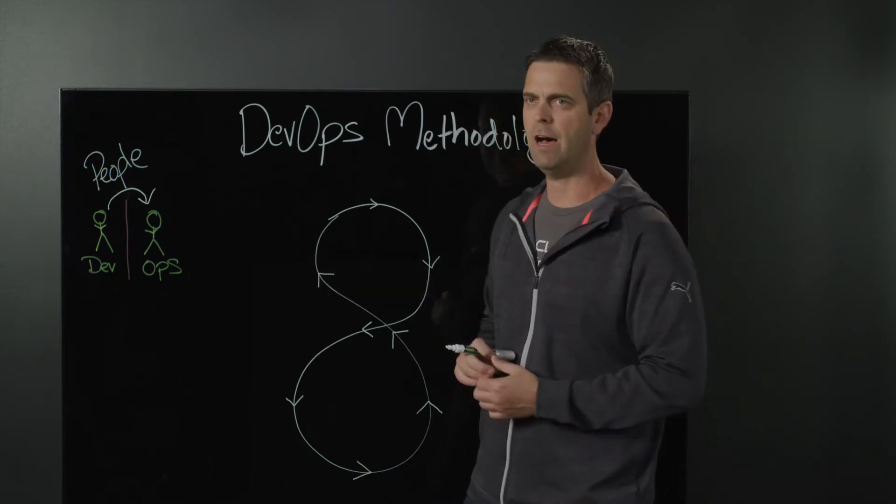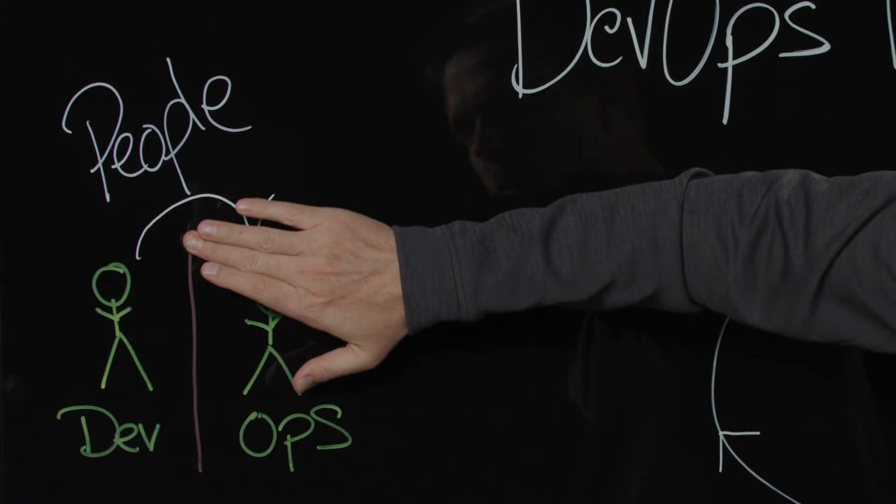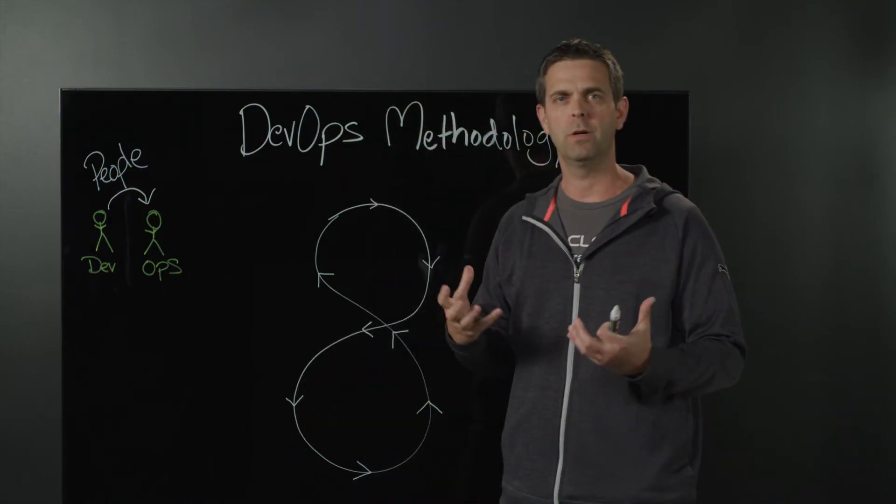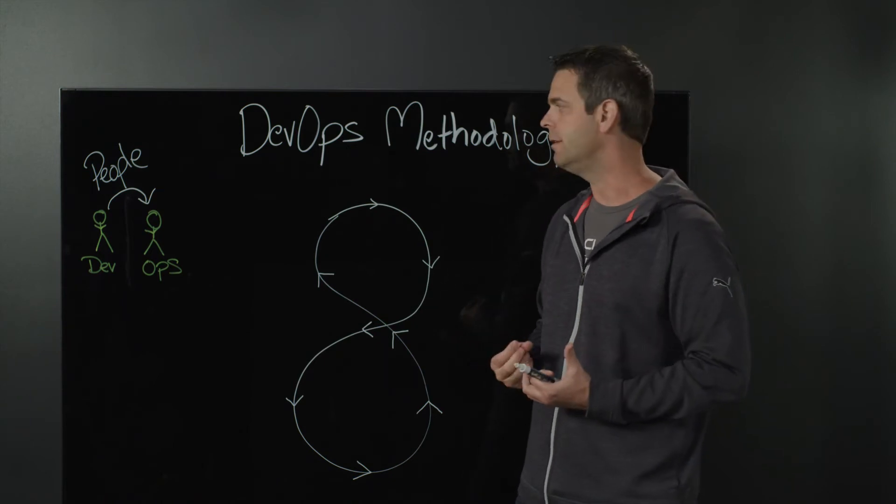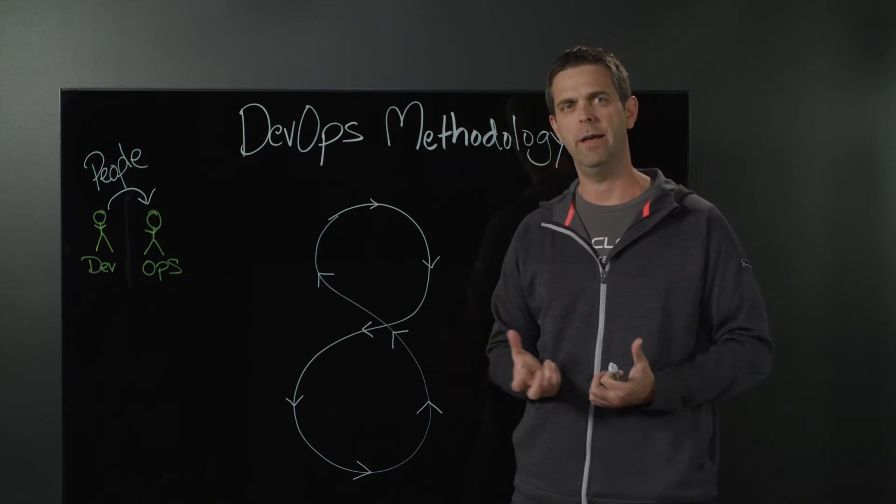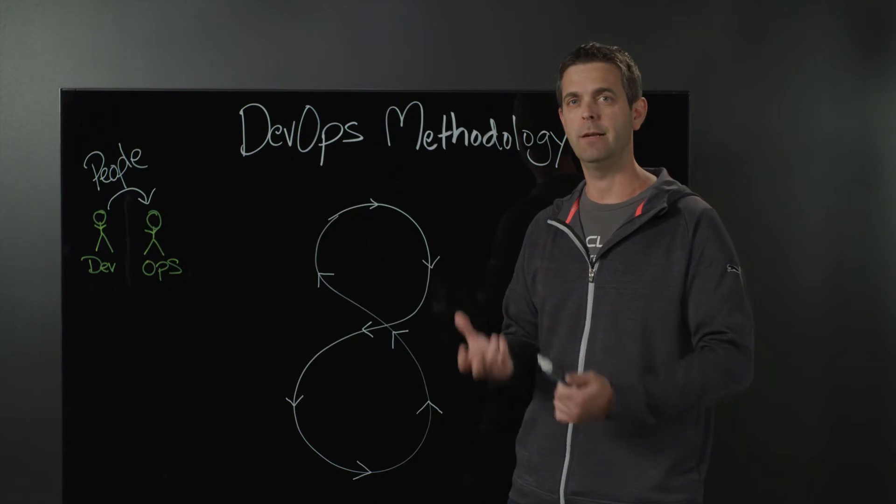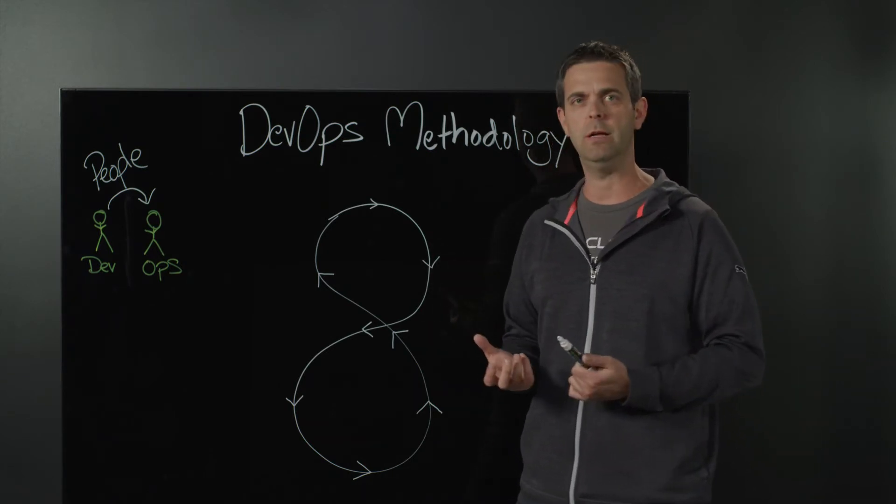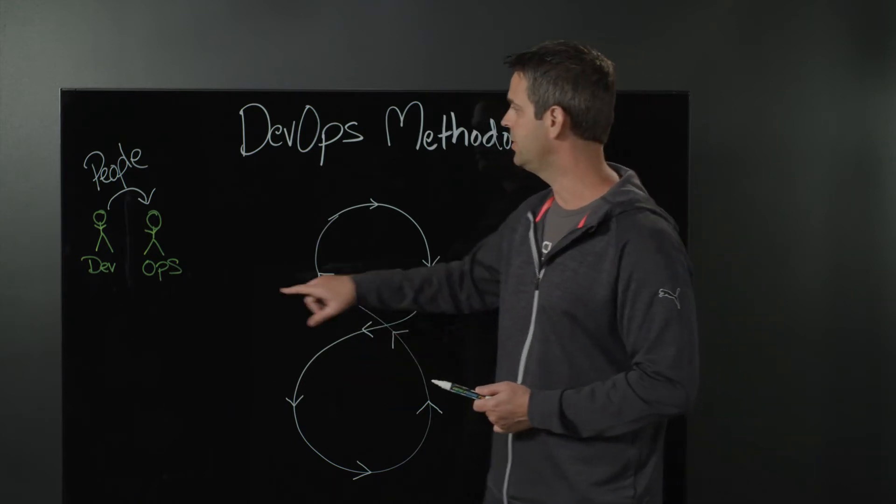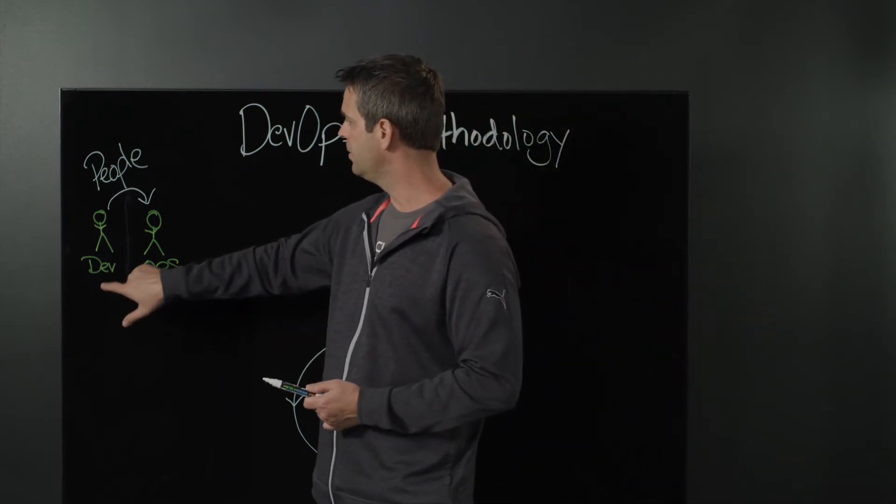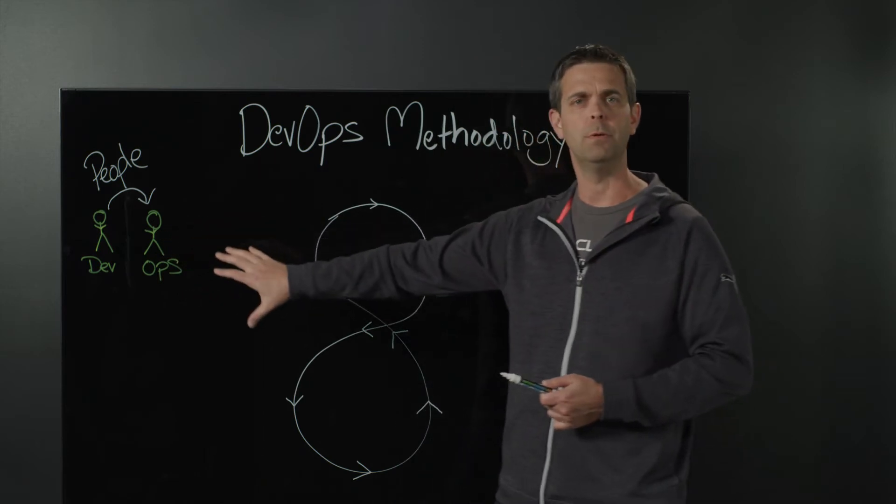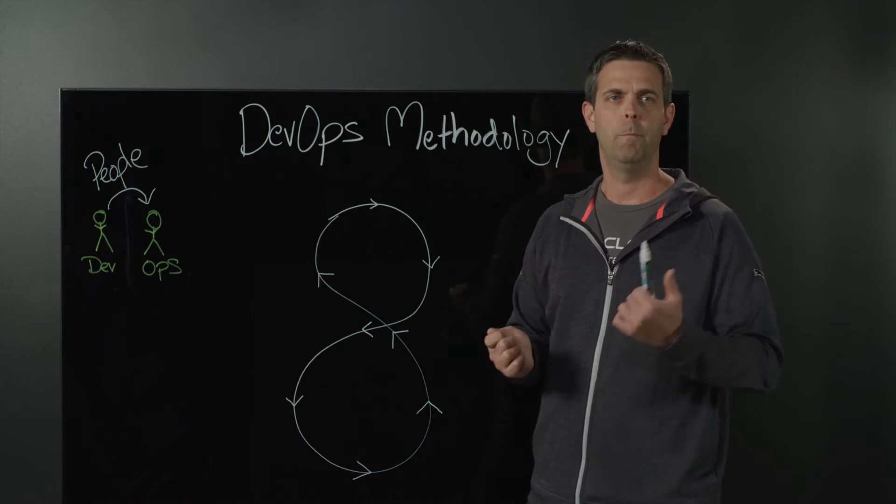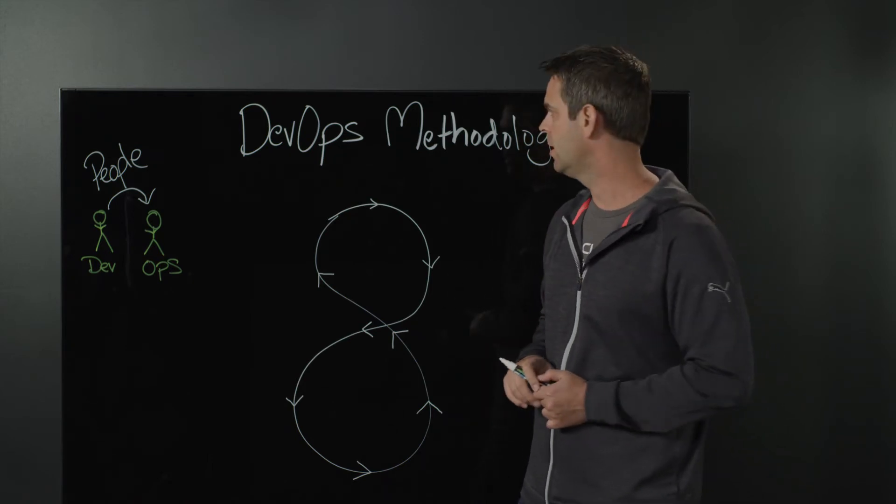The people portion of DevOps is really about eliminating that wall. It's a cultural shift where we want to break that down, whether we're combining teams to be one cohesive unit, whether we're modifying or enhancing our communication strategy to eliminate a lot of those challenges that usually unfold or present themselves due to a lack of communication or understanding between these two teams. The first thing we have to address is the people. Make sure that the developers and the operations team are working together as one cohesive unit.